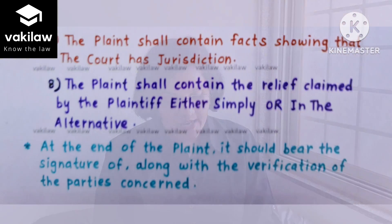At the end, the plaint shall contain the relief claimed by the plaintiff either simply or in the alternative. Order 7 Rule 7 of the Code of Civil Procedure, 1908 states that the plaint shall specifically state the relief which the plaintiff claims, either simply or in the alternative, and it shall not be necessary to ask for general or other relief which may always be given as the court thinks just. This rule applies to both the plaintiff's plaint and the defendant's written statement.